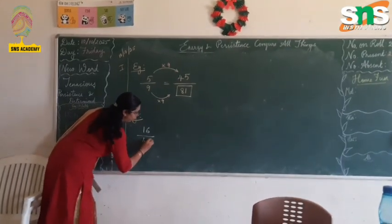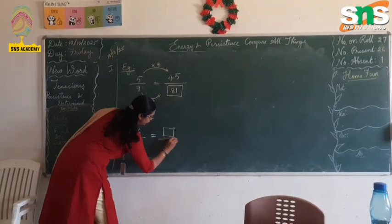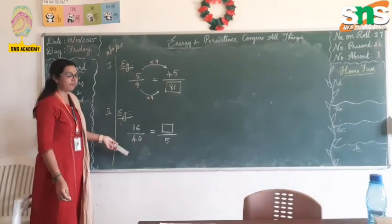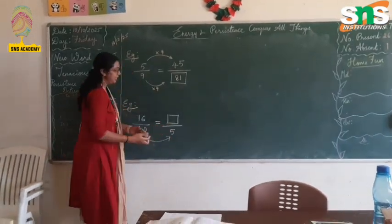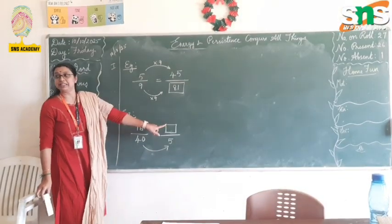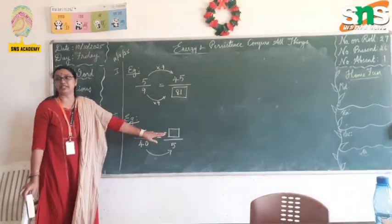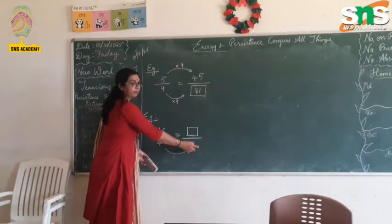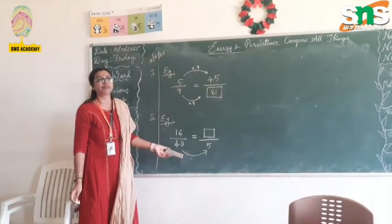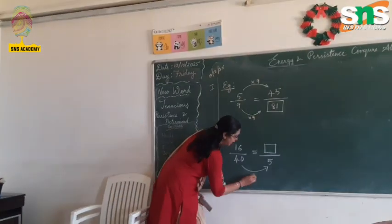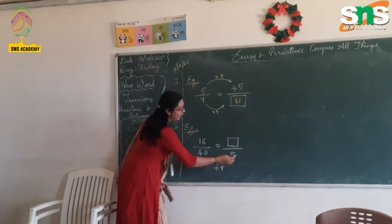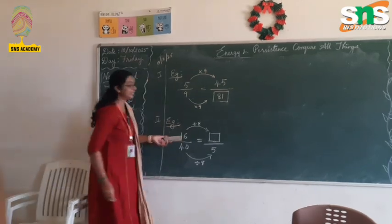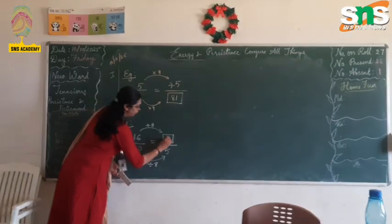16 by 40. So it is given as box by 5. Here 16 by 40 is the given fraction, and on the right hand side it is equal to box by 5. You have to find the numerator which should be equivalent to the given fraction. So 40 is reduced to 5. How is it reduced? When it is divided by 8 you get 5. So in the numerator also we have to divide by 8. 16 divided by 8 is 2. This is clear, children? Yes ma'am.